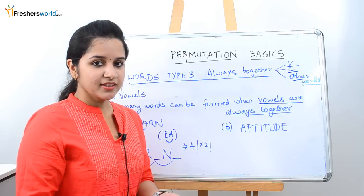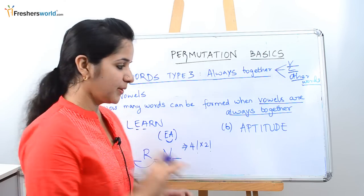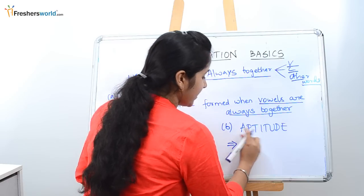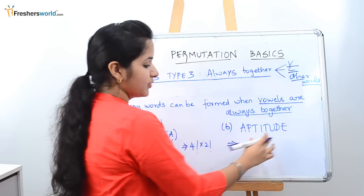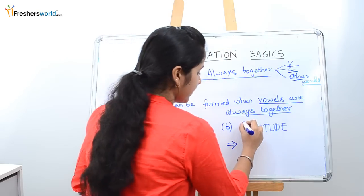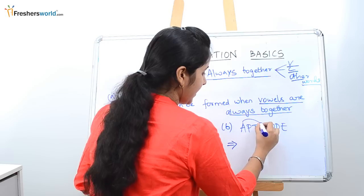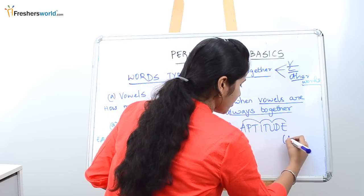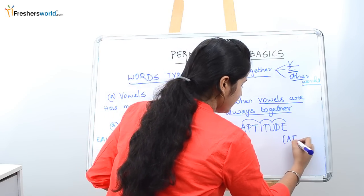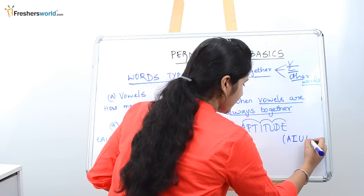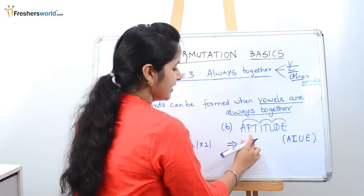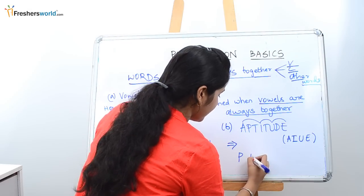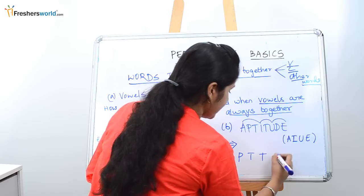Let's take another example with repeated letters. In case of APTITUDE, what are the vowels here? A, I, U, and E. Since the vowels are always together, write them separately. What are the remaining letters? P, T, T, and D.